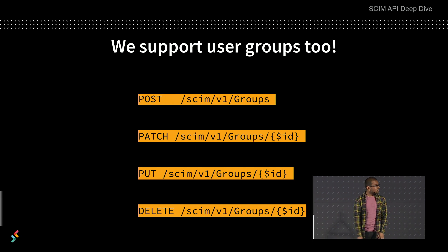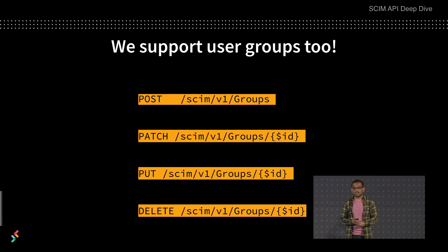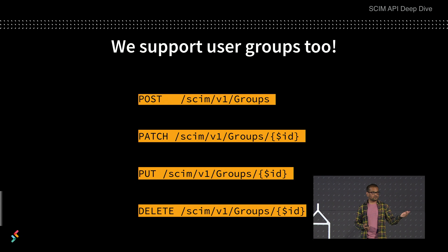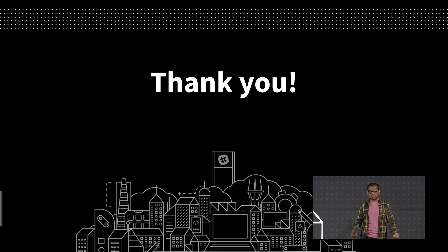That was a quick look at how our SCIM API enables large companies to manage user lifecycle at Slack. I'm happy to talk about any of these things afterwards — you can come find me outside. Thanks for listening.